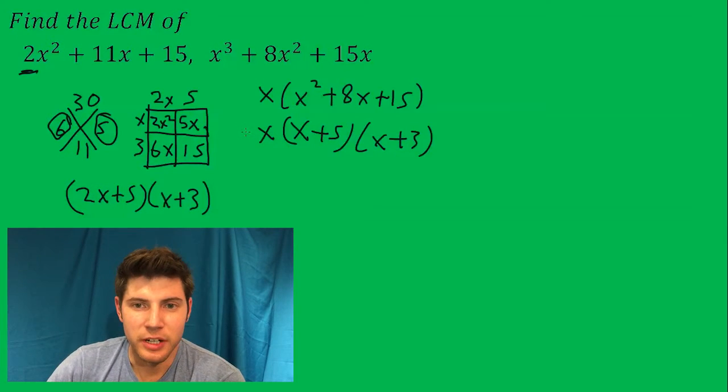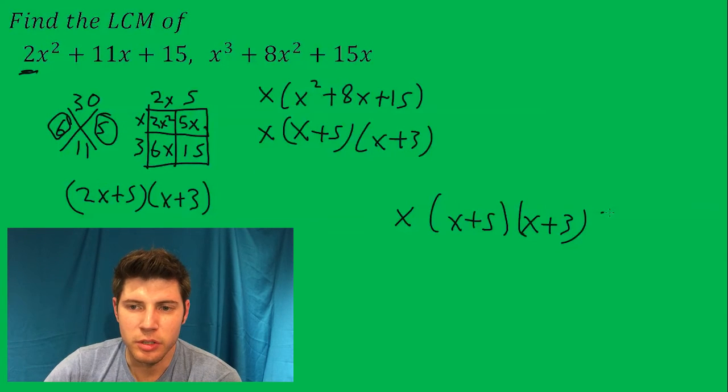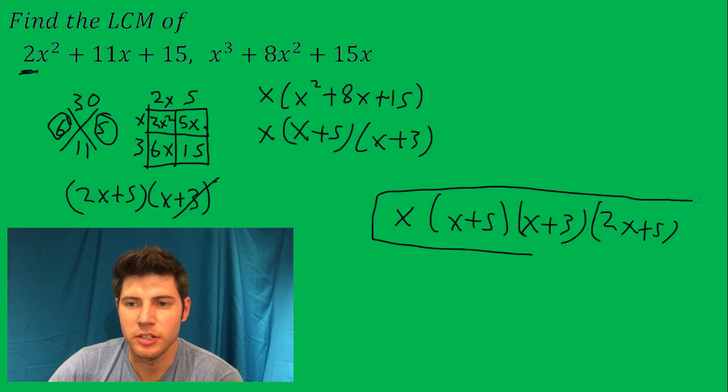And now we just need to find out what do these have in common. So the x, we need at least 1x for our LCM. We'll need an x plus 5. We'll need an x plus 3 and a 2x plus 5. And then we don't need to list another x plus 3 because that's already taken into account here. So this right here is our LCM.